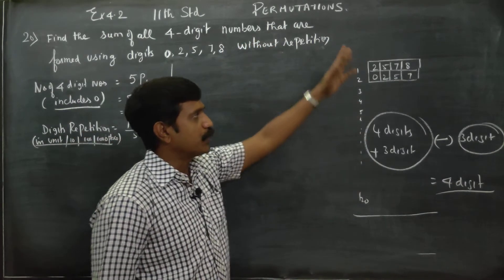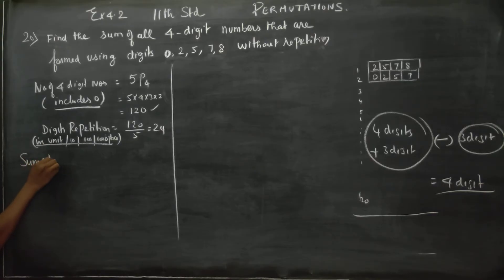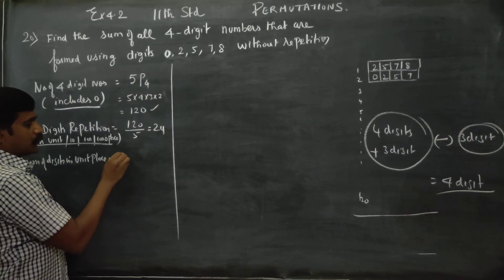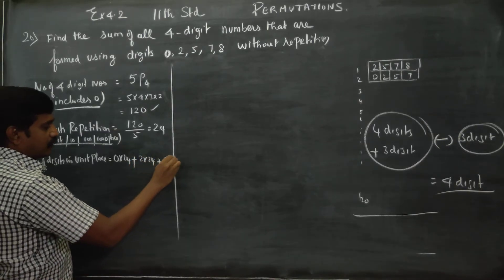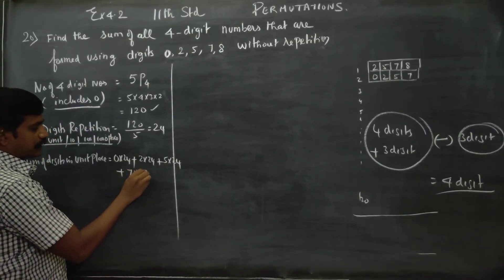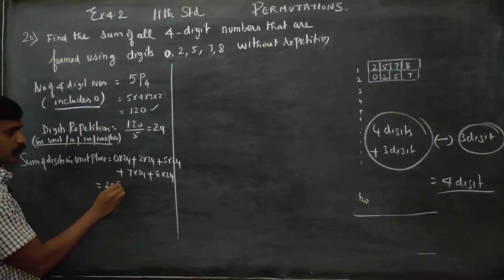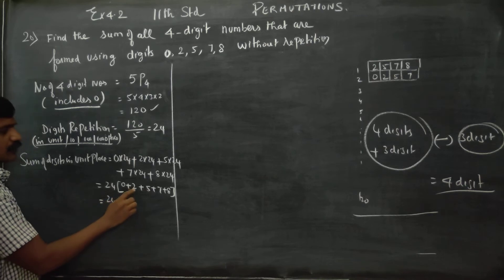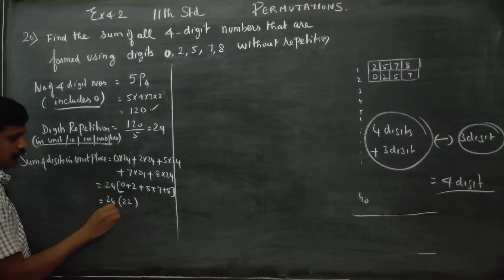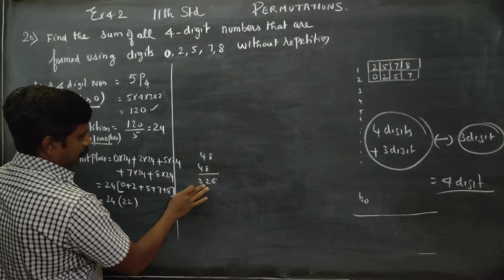Now, sum of the digits in unit place is equal to: 0 times 24, plus 2 times 24, plus 5 times 24, plus 7 times 24, plus 8 times 24. Now 24 is common, so the balance will be 0 plus 2 plus 5 plus 7 plus 8. That is 24 into 22, which equals 528.